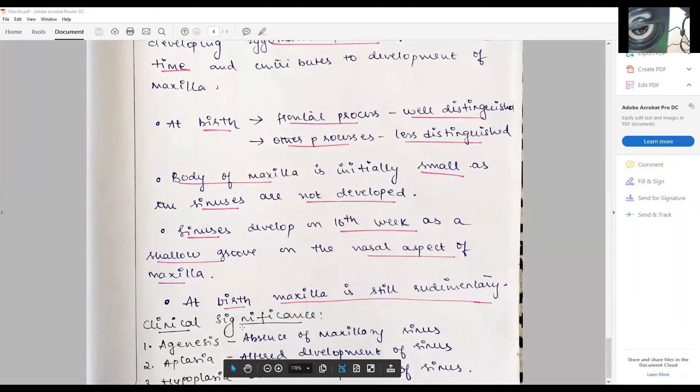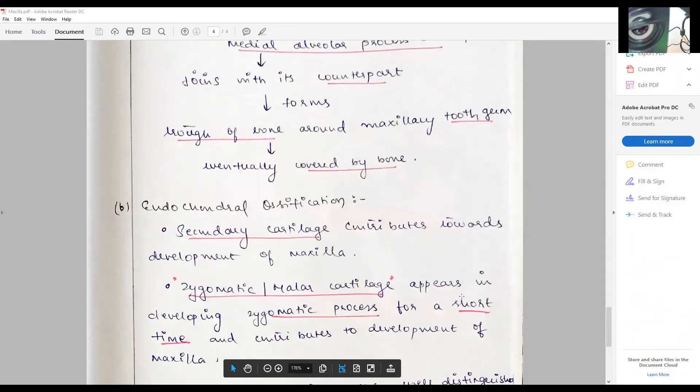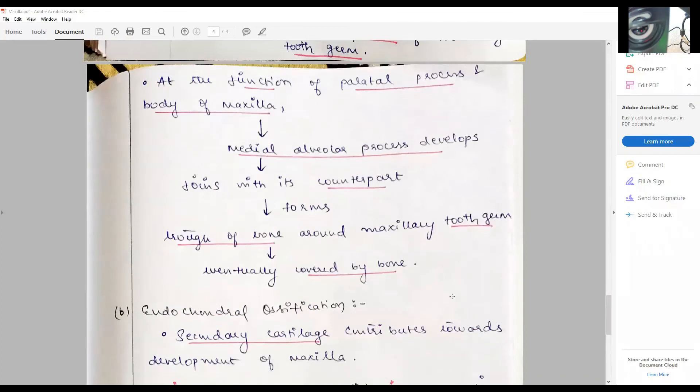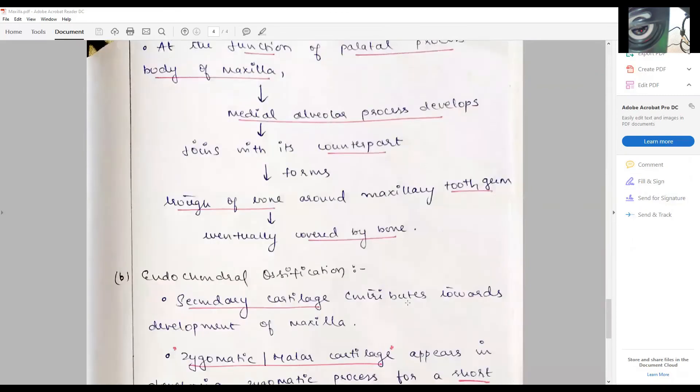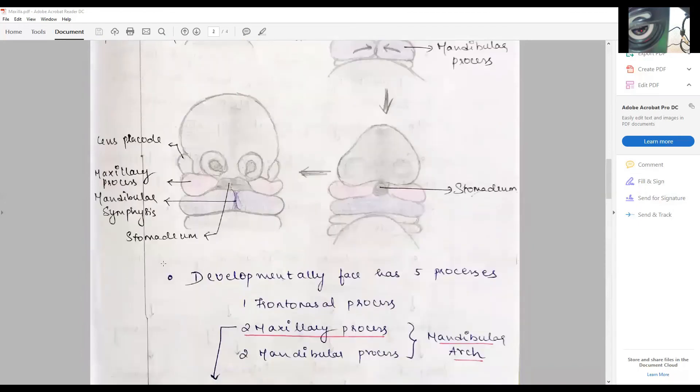But still at birth, maxilla is still rudimentary. Clinical significance: agenesis (absence of maxillary sinus), aplasia (altered development of maxillary), hypoplasia (less development of maxillary sinus), and the clefts. Here you have to discuss about the downward and sideward movement of the maxillary process. This is more important.